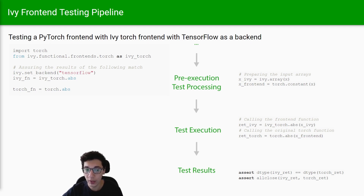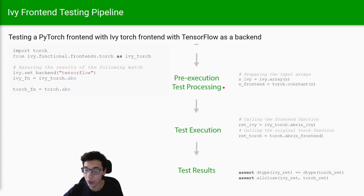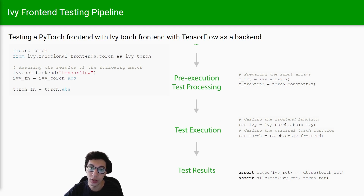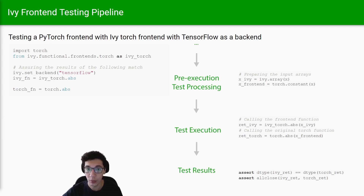The next step is to execute the function with the generated arguments - you can see here the execution step. We basically use the generated arguments from the previous step and call the Ivy torch frontend framework, and we also call the torch original framework function using the generated data. Finally, we assert that return values are almost equal to what we generated from our frontend and also from the original framework. We may also perform additional checks like asserting that the dtype is equal and also asserting that the device is equal.